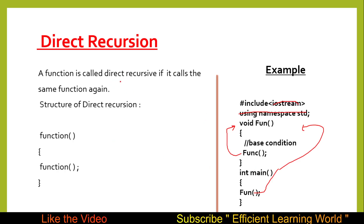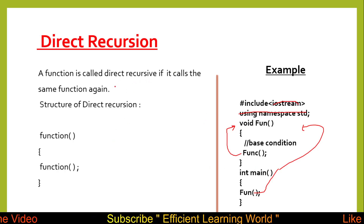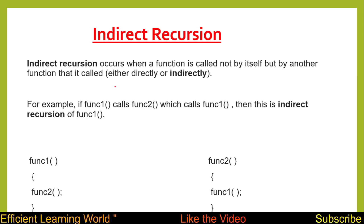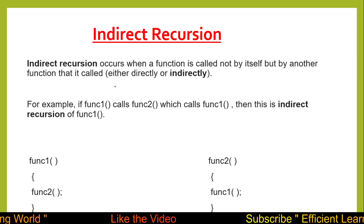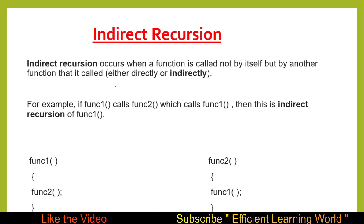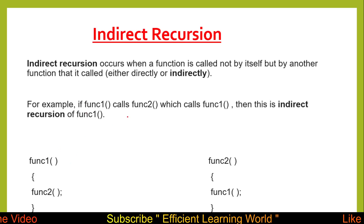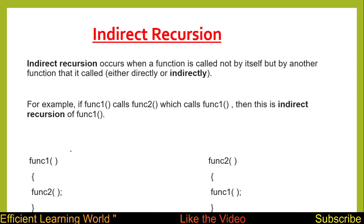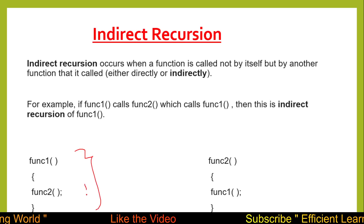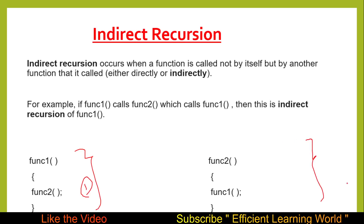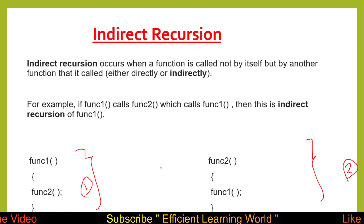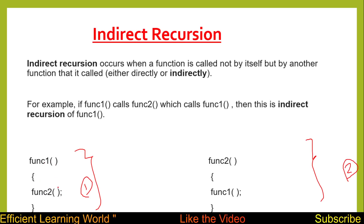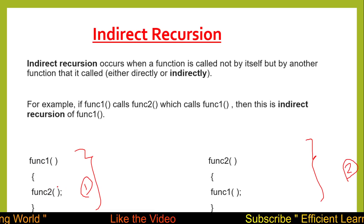Now let's discuss indirect recursion. Indirect recursion occurs when a function is called not by itself but by another function that is called either directly or indirectly. For example, if function one calls function two, which in turn calls function one, then this is indirect recursion. So here we have function one and function two — two separate functions.